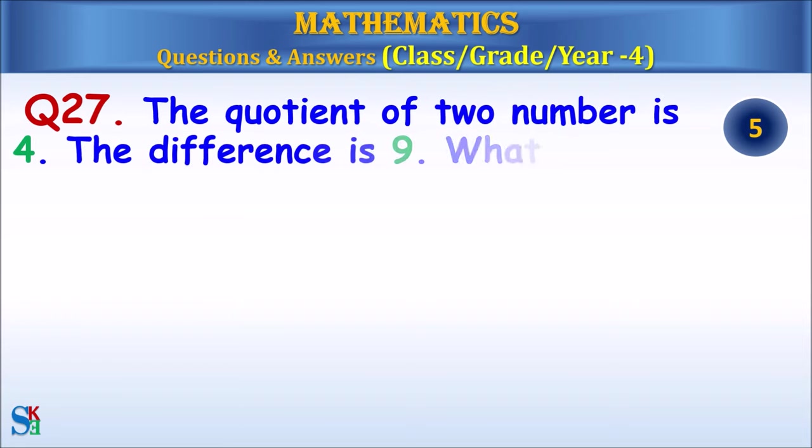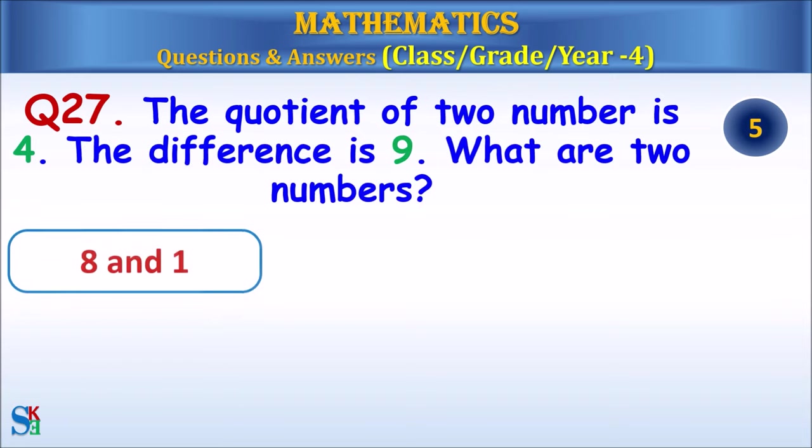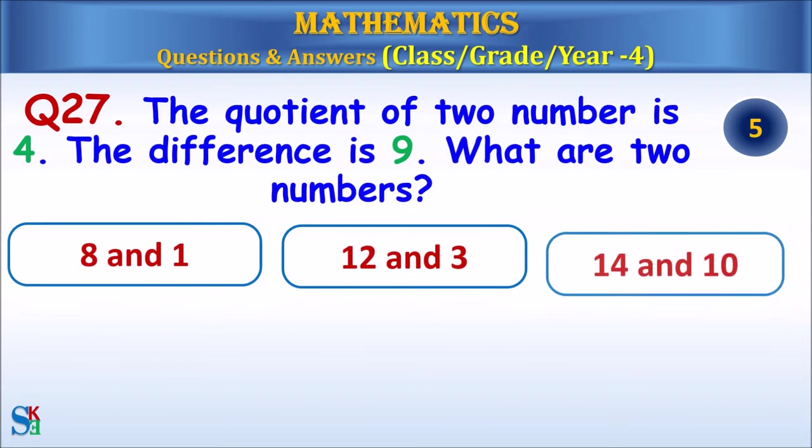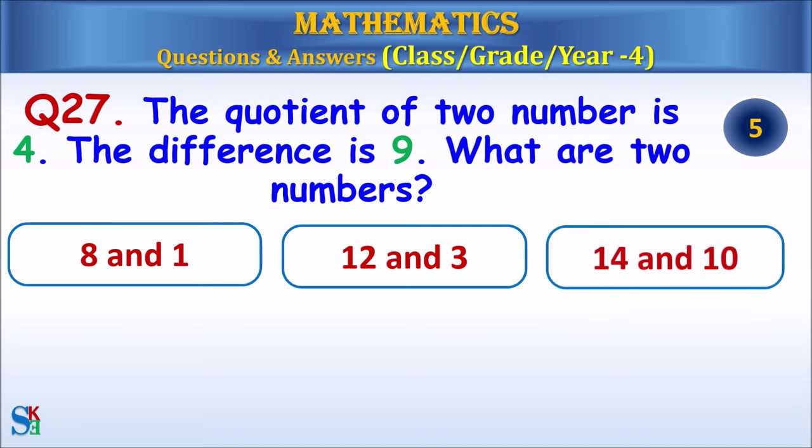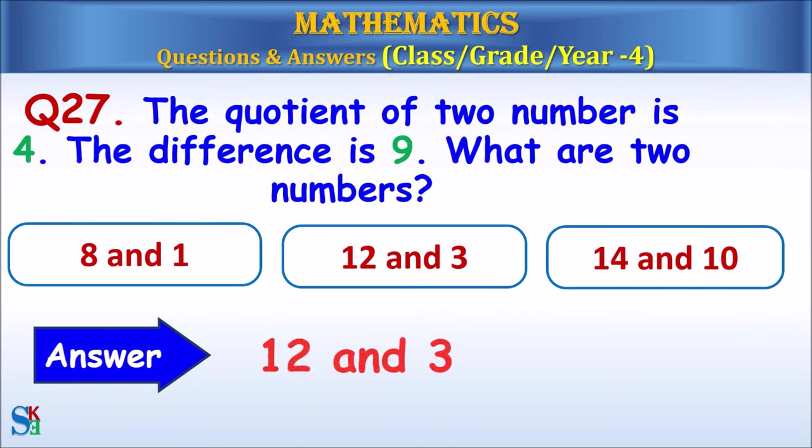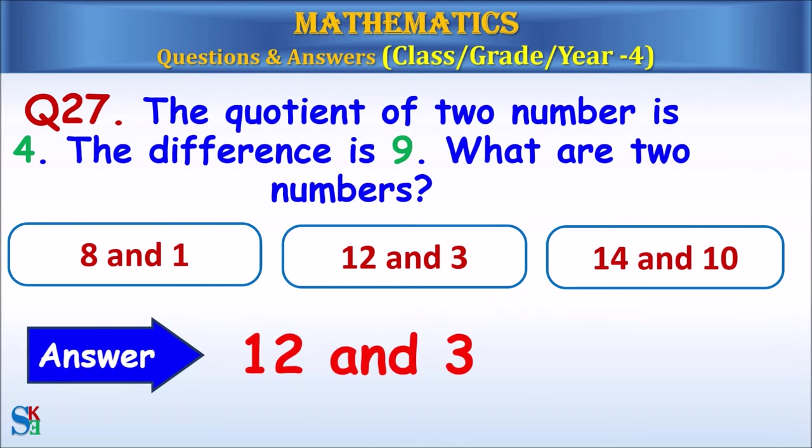Question 27: The quotient of two numbers is 4. The difference is 9. What are the two numbers? The answer is 12 and 3.